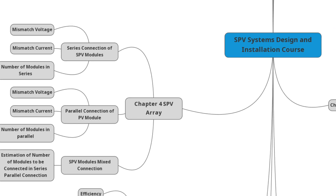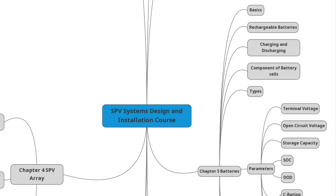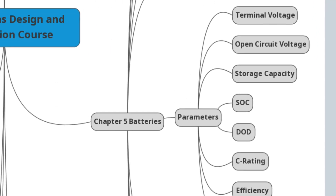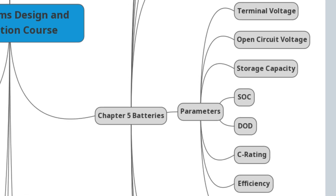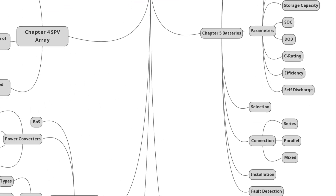Chapter 5: Batteries — basics of batteries, rechargeable batteries, how does a battery work, charging and discharging of batteries, components of a battery cell, types of batteries, parameters of batteries, battery terminal voltage, battery open circuit voltage and terminal voltage, terminologies for battery terminal voltage, battery storage capacity, state of charge, depth of discharge, C-rating, battery efficiency, battery operating temperature, life cycle, self-discharge, and shelf life.